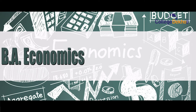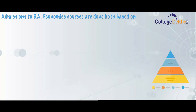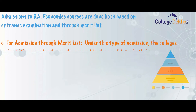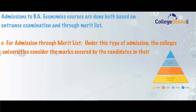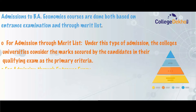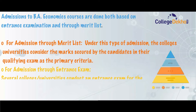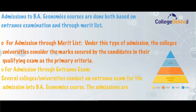BA Economics admission process: admissions to the BA Economics course are done based on both entrance examinations and merit lists. For admission through merit list, colleges and universities consider the marks secured by candidates in their qualifying exam as the primary criteria. For admission through entrance exam, several colleges and universities conduct an entrance exam for admission into the BA Economics course, and admissions are provided based on the entrance score secured by the candidate.